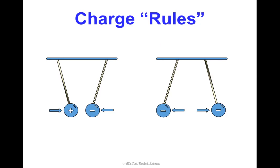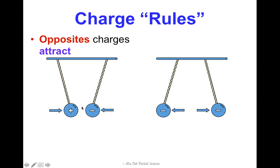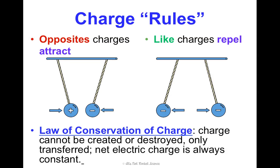We have a couple of rules about charge that you can hopefully deduce from this picture. Opposite charges attract — positive and negative. Like charges, such as negative-negative or positive-positive, will repel each other. Another rule related to charge is called the Law of Conservation of Charge. This says that charge cannot be created or destroyed — it's only transferred, so net electric charge is always constant.